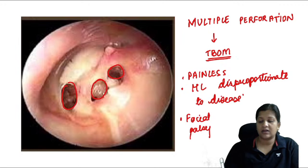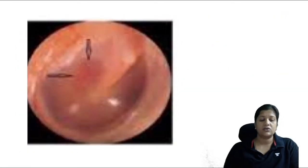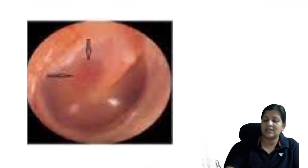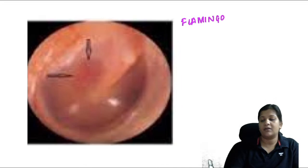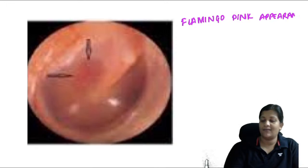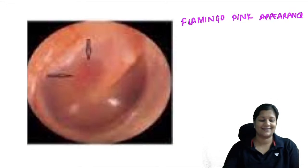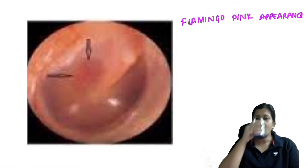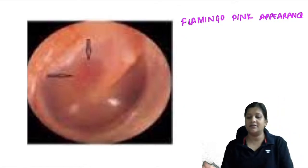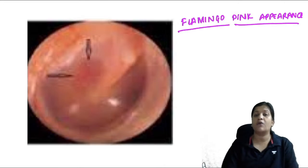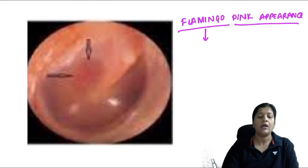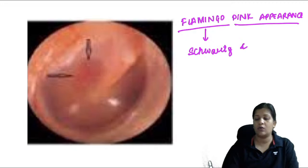The next image shows the flamingo pink appearance of the promontory seen through an intact tympanic membrane. This is called Schwartz sign, seen in otosclerosis. It is only positive when there is an active focus of disease with active deposition occurring.